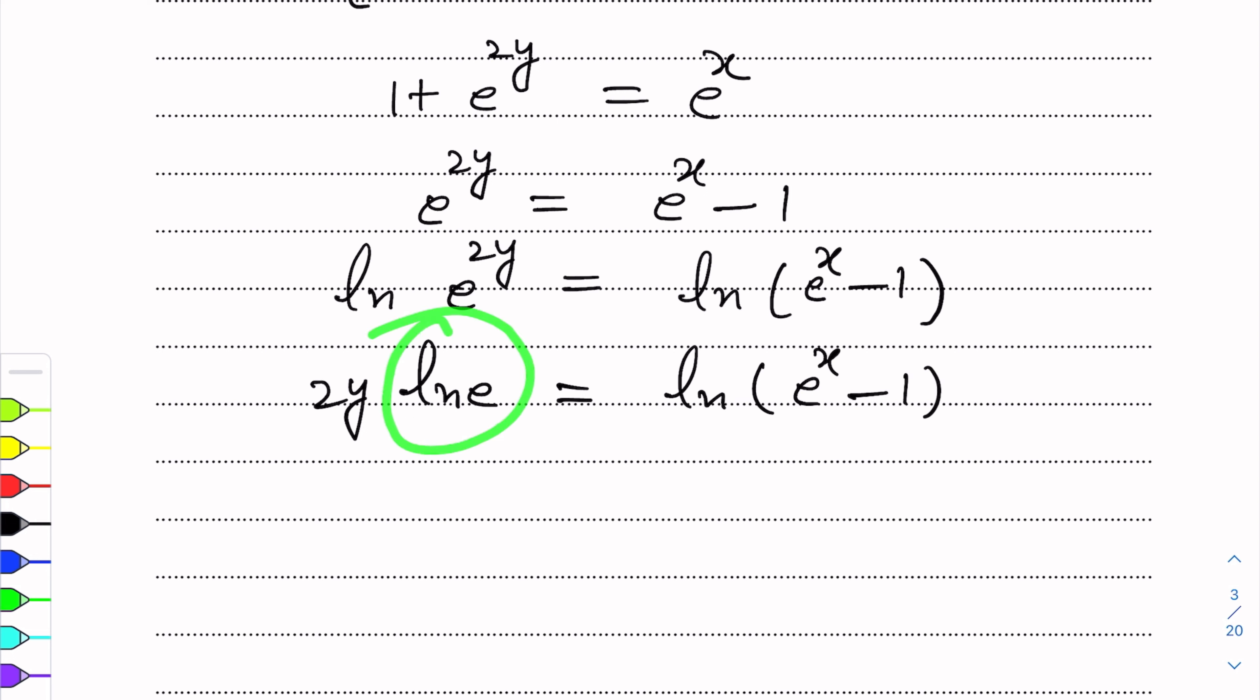Log e equals 1. So we get 2y = ln(e^x - 1).